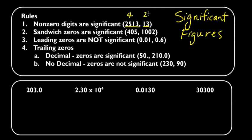Sandwich zeros are significant. Sandwich zeros are zeros that are in between significant figures. So this zero right here is also significant. So we have 1, 2, 3 — this has three significant figures.